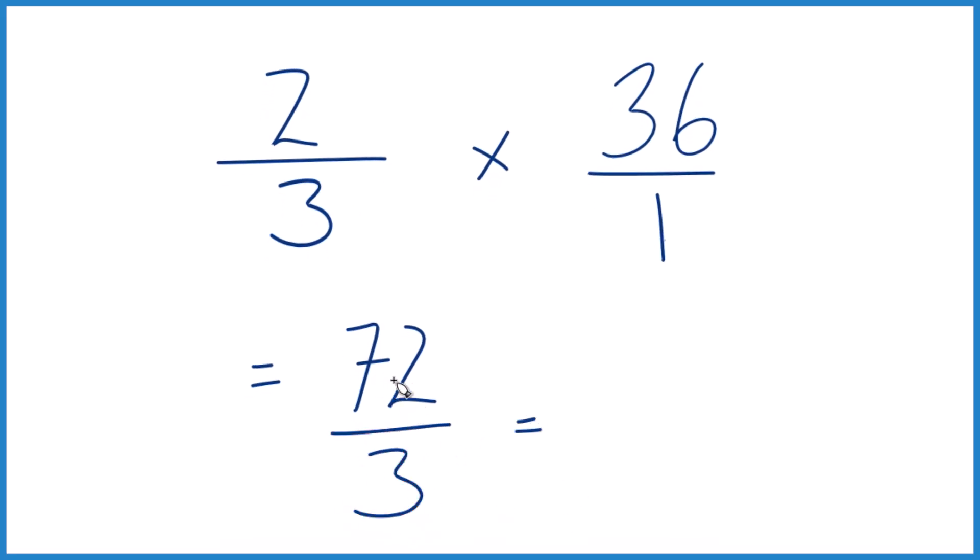If you divide 72 by three, you get 24. So in answer to our question, two-thirds of 36, or two-thirds times 36, that equals 24.